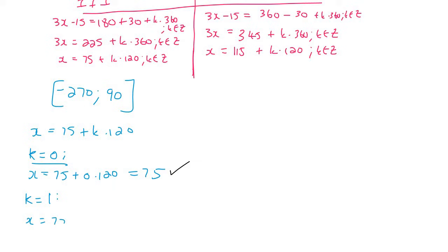So that means that x would be 75 plus 1 times 120, and that's going to be 195. But now we're going a little bit too far because now we are going out of that interval.